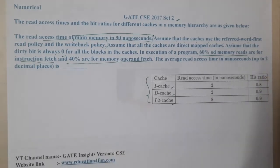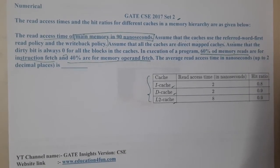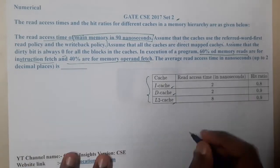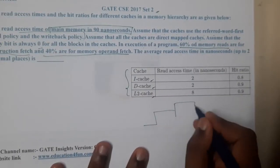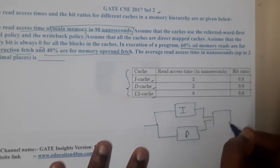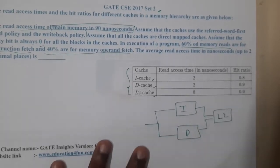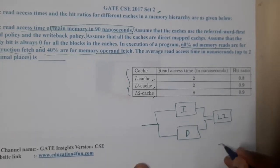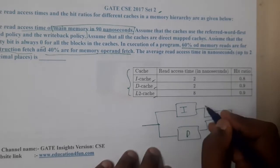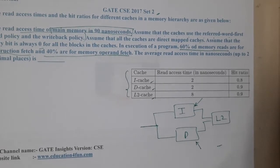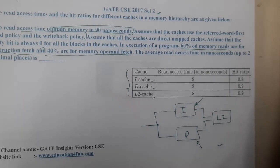There are only two levels of caches. The structure is: I-cache and D-cache are at the first level, and below both of them is the L2 cache. This is the standard structure — a separate cache for instructions and a separate cache for data. Now let us start solving the question.